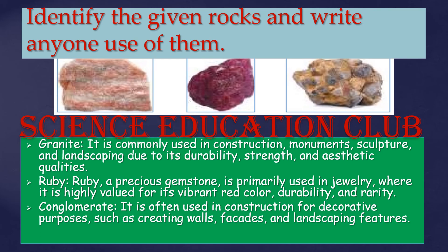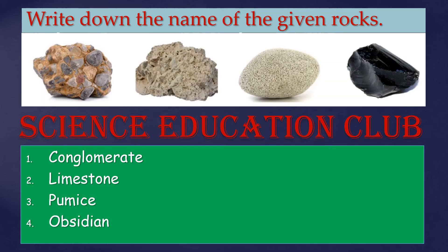Identify the given rocks and write one use of each. Granite is used in construction, monuments, sculpture, and landscaping. Ruby is a precious gemstone primarily used in jewelry. Conglomerate is used for decorative purposes. Write down the names of the given rocks: the first one is conglomerate, the second is limestone, the third is pumice, and the fourth is obsidian.